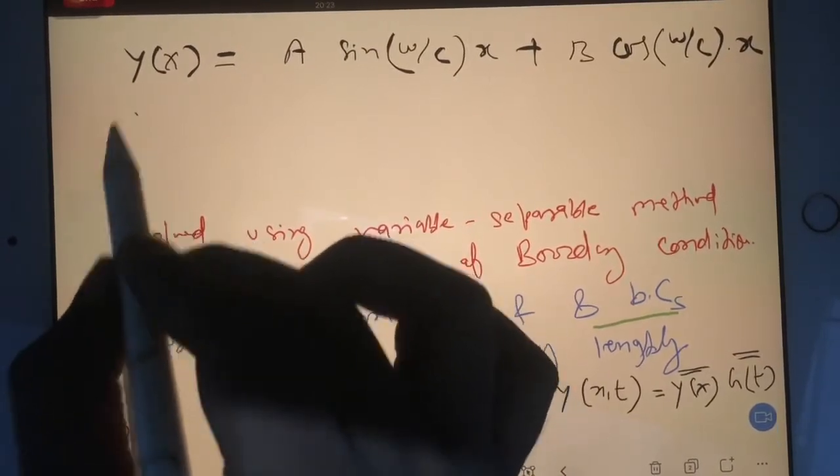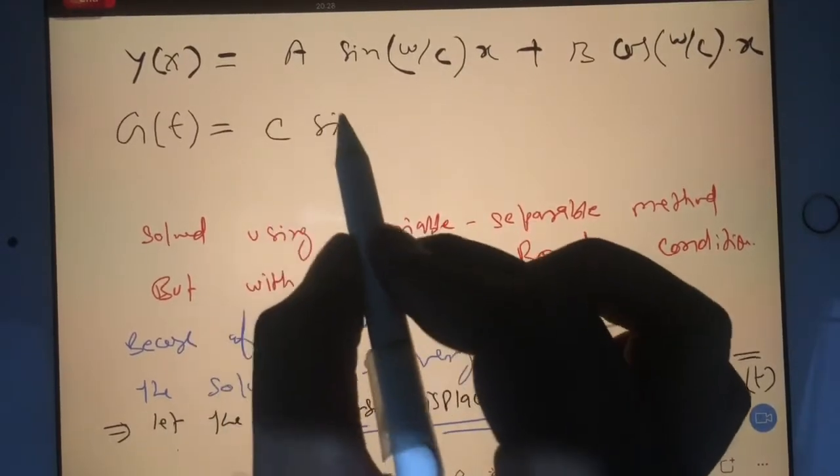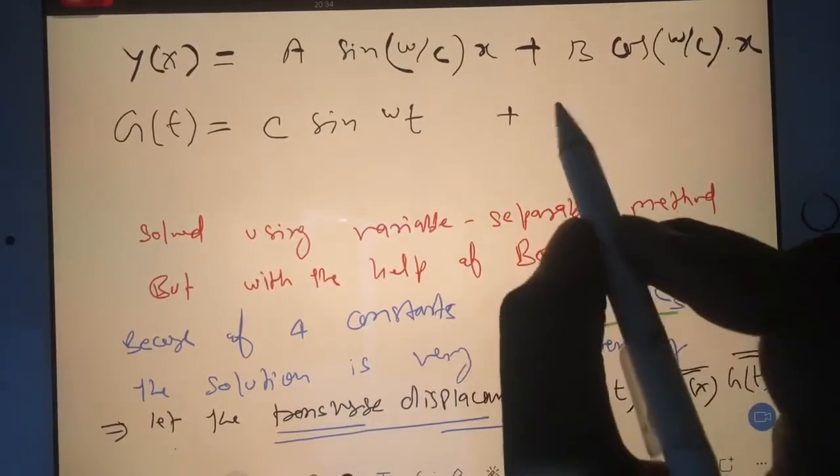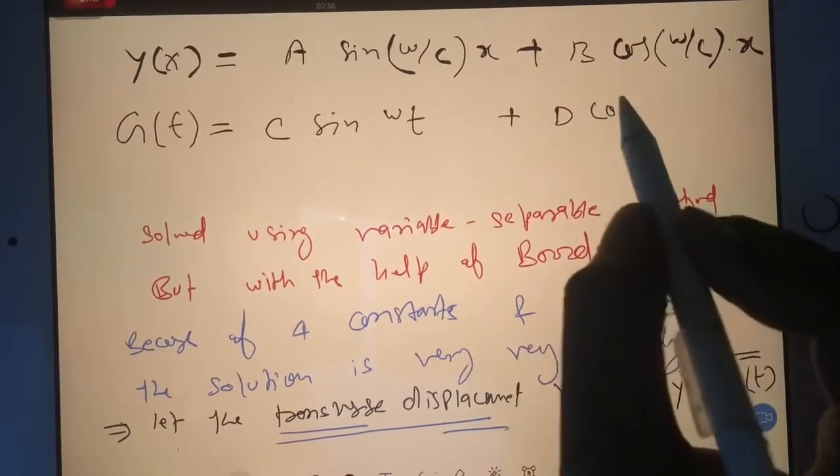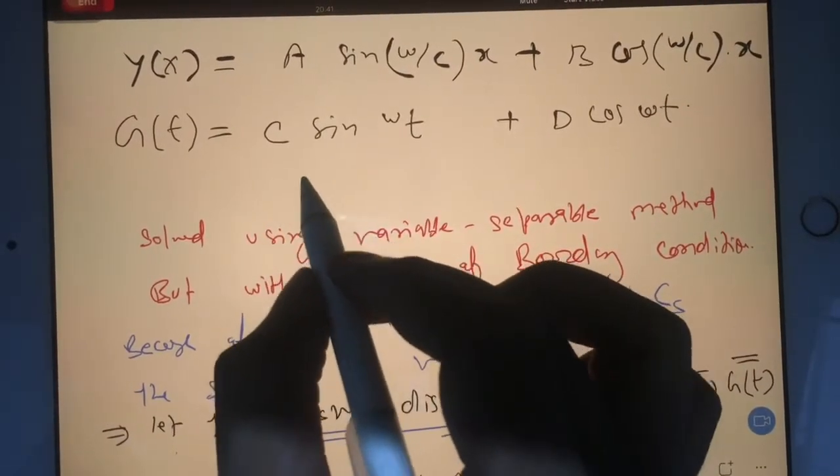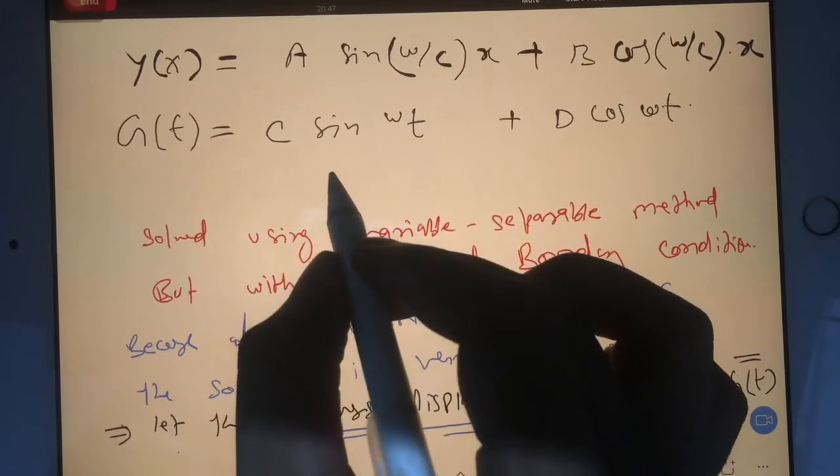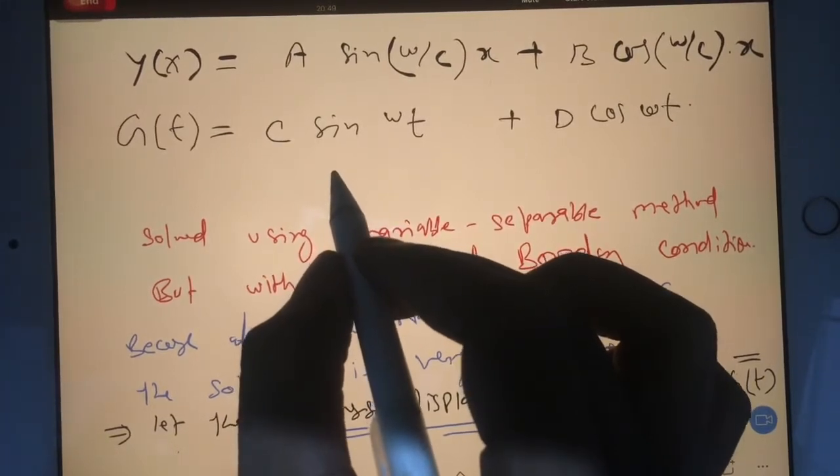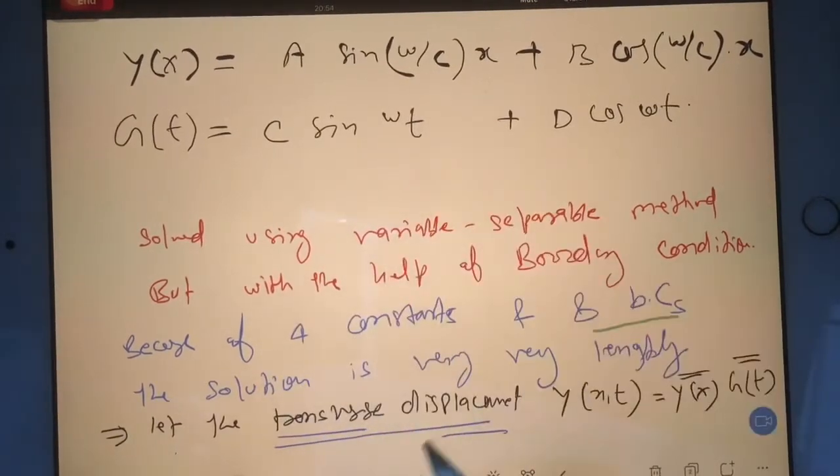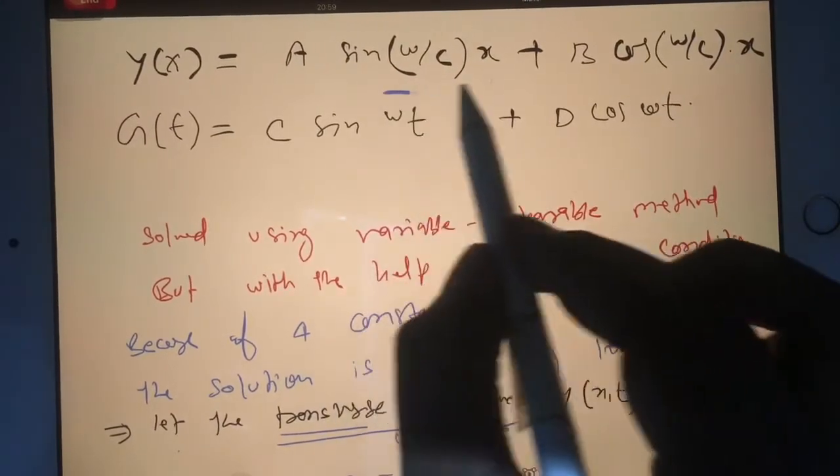Your g, which is function of time, is C sin(ω)t plus D cos(ω)t. In our 12th class we had oscillation and wave. Here in engineering we have oscillation and vibration. But this transverse displacement is very similar to wave equation, that's why wave number is coming into picture.